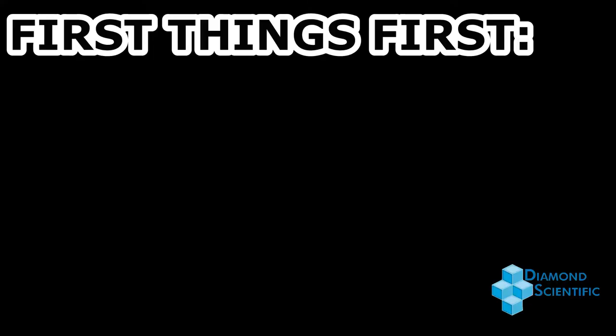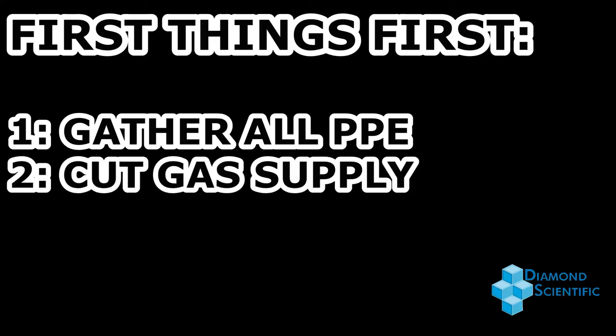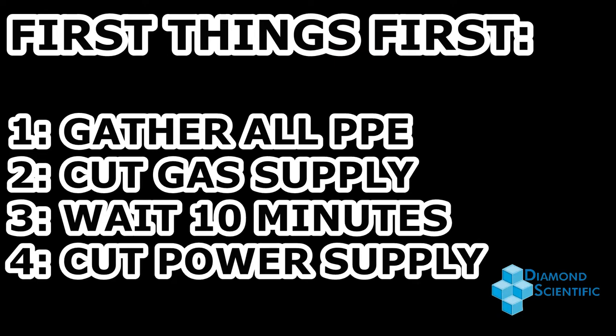First, whenever performing maintenance on the SWG 100, gather all appropriate personal protective equipment. Then cut off the gas supply, allow 10 minutes for a full gas purge cycle to complete, before completely cutting power to the analyzer.